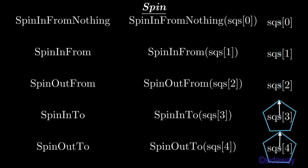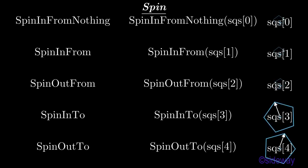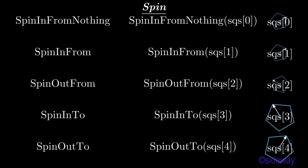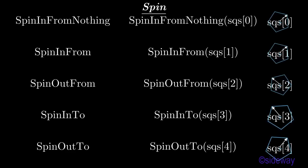SpinInFromNothing method is used to spin a mathematical object from nothing through a pie counterclockwise rotation about center animatedly. SpinInFrom method is used to grow a mathematical object at a point through a pie counterclockwise rotation animatedly.